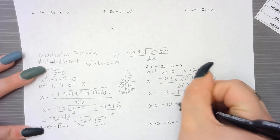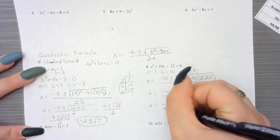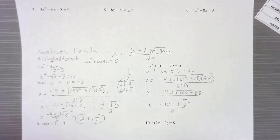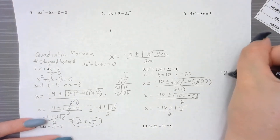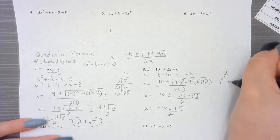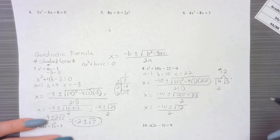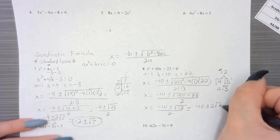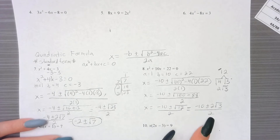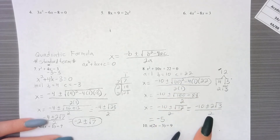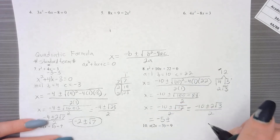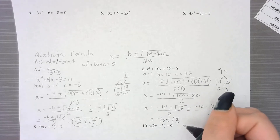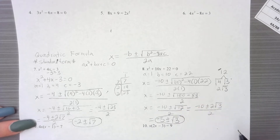So x equals negative 10 plus or minus the square root of 100 minus 88, which gives us 12, all over 2. We simplify radical 12: it splits into 4 and 3. The square root of 4 is 2, and 3 doesn't have a perfect square root, so that's 2 radical 3. Both terms in the numerator are divisible by 2, so negative 10 divided by 2 is negative 5, and 2 divided by 2 is 1. Our answer is negative 5 plus or minus radical 3.